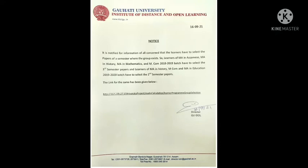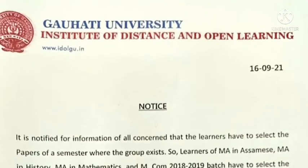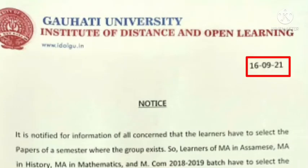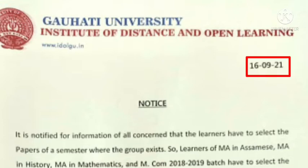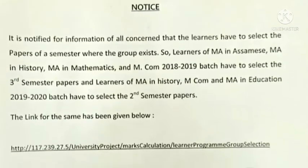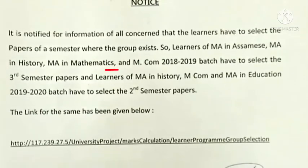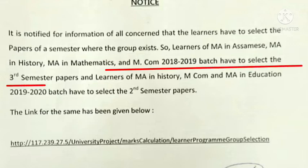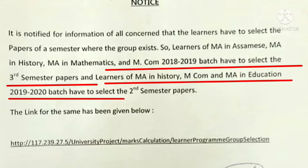Hello friends. The 2019-2029 Bachelor's idol goate proprietor notification is available. This notification is about how you will select the group and semester. I am in the second semester in 2019.